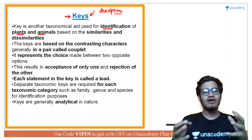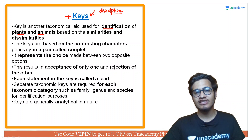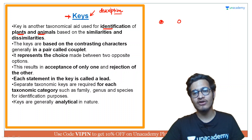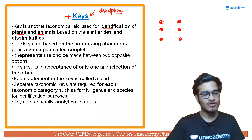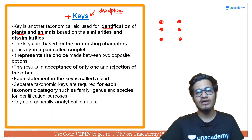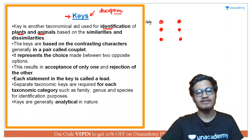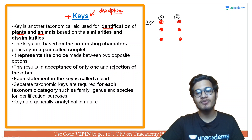Keys के अंदर दो analytical options होते हैं — जैसे yes या no, present या absent, trimeras या pentameras. इस तरीके से contrasting characters लिखे जाते हैं. For example, किसी particular specimen का description लेते हुए, आप देखेंगे कि calyx कैसी है — trimeras है यानि तीन के group में, या pentameras है यानि पांच के group में. तो आपने उस option को click कर दिया.